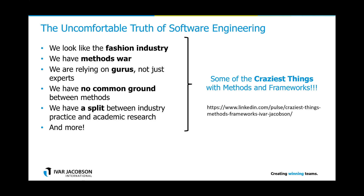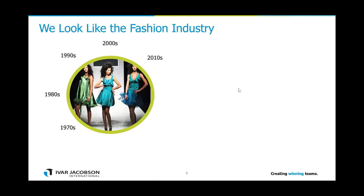There is a LinkedIn article that discusses this in detail. We look like a fashion industry. In 1970, we had JSP, the Jackson Structure Program — it was extremely popular, but it died. In the 80s, we had things like Structural Analysis and Design Technique. People suggested we would use it forever. It died.